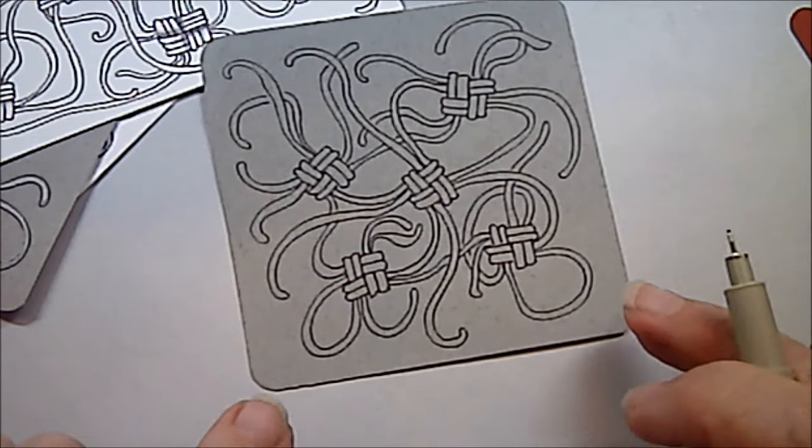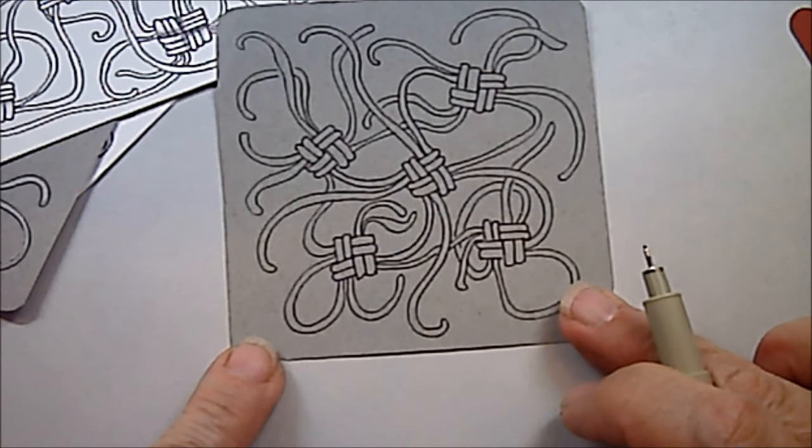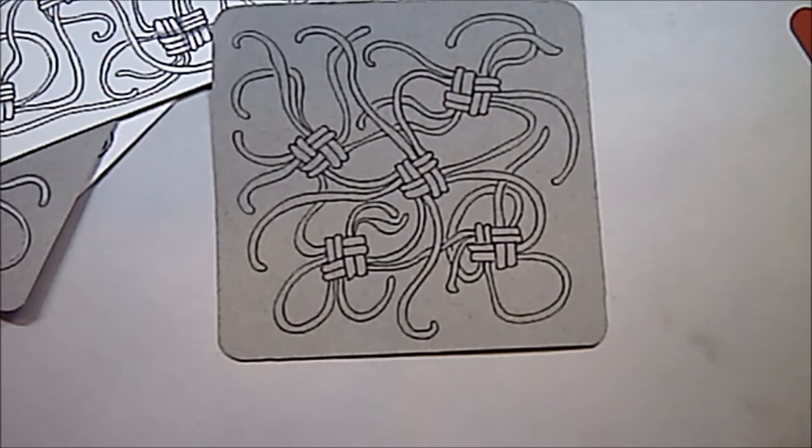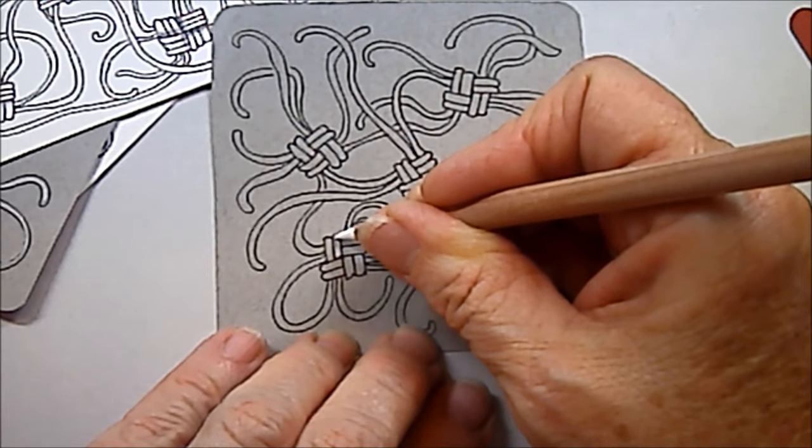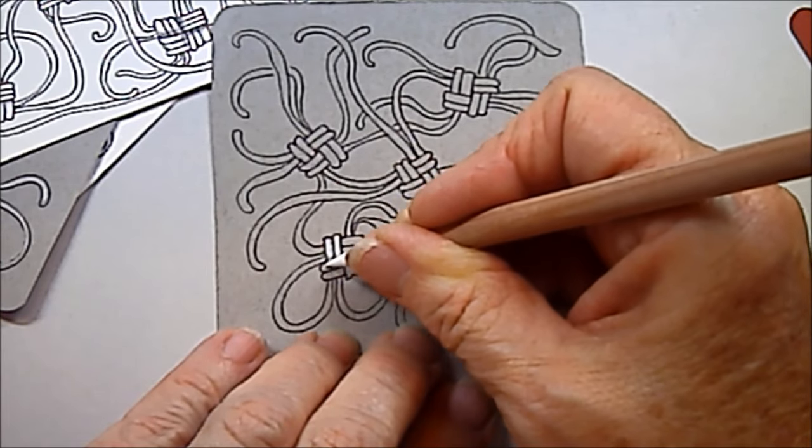And it looks like there we have macrame. Amazing, isn't it? Now, because I did it on gray, I can shade with a little white. So I'm going to shade this with my chalk pencil.